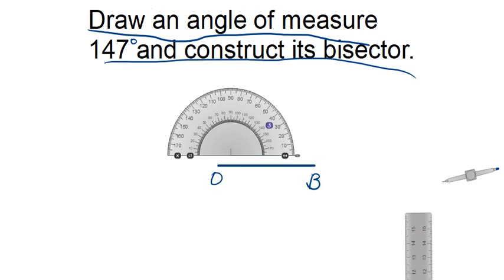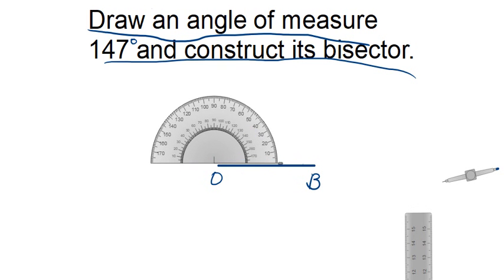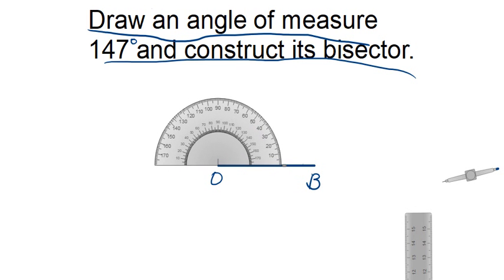Why only at point O and not at point B? Because point O is my center of the angle and we always keep the protractor's point at the center.